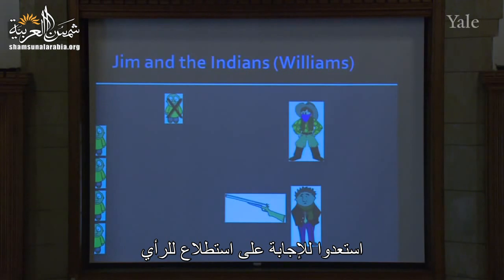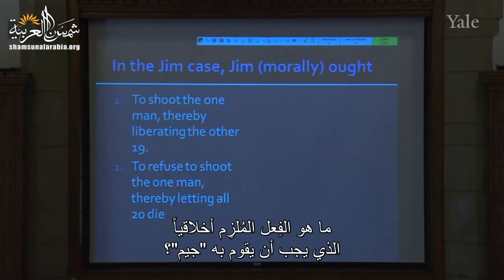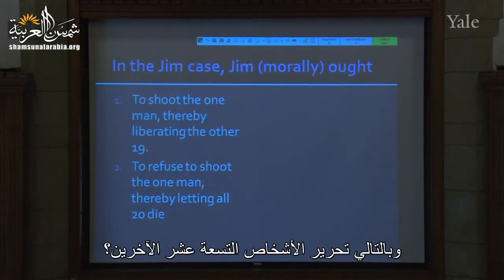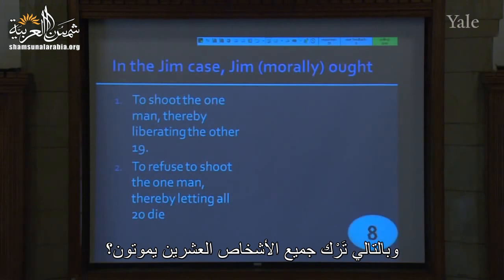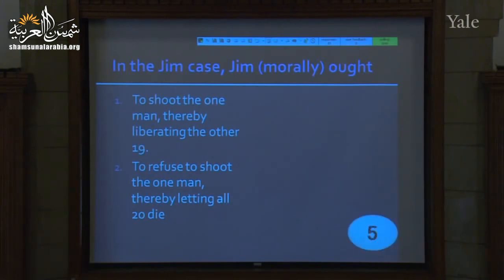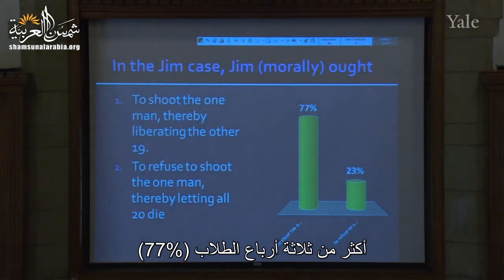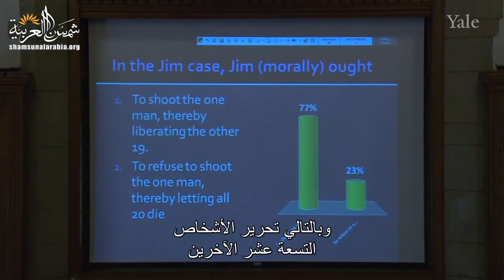Clickers out. Question: in the Jim case, what is Jim morally obliged to do? Is the moral thing to shoot the one man, thereby liberating the other 19? Or is the right thing to refuse to shoot, thereby letting all 20 die? Almost three-quarters — actually more than three-quarters — of you think the morally right thing for Jim to do is to shoot one man, thereby liberating the other 19.